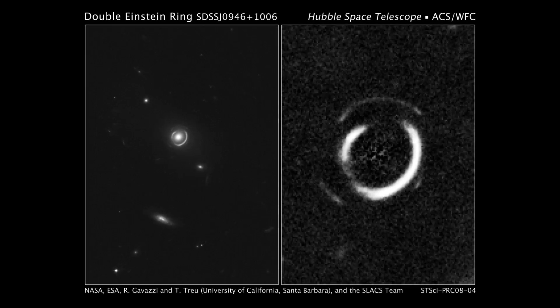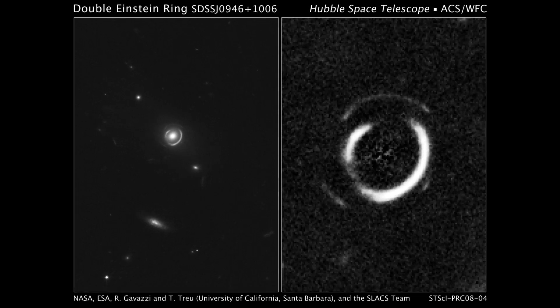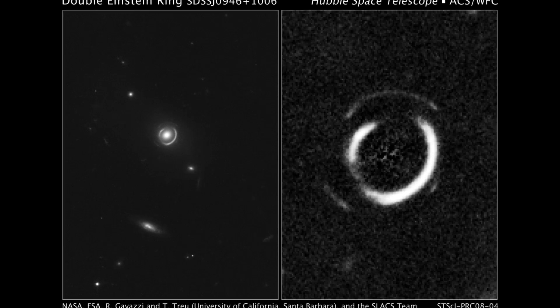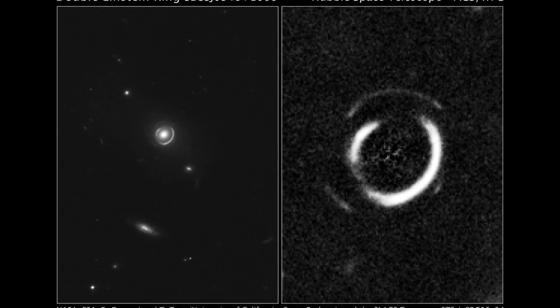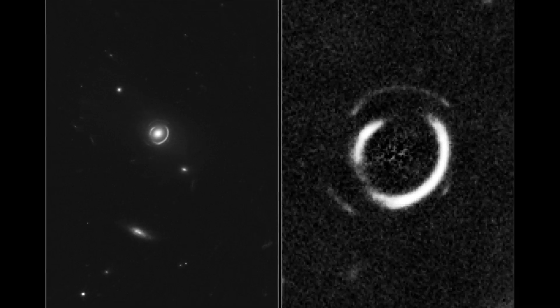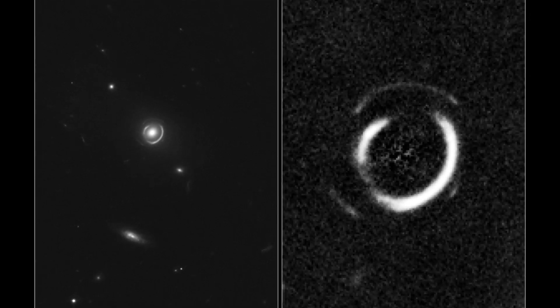Using the Hubble Space Telescope, a double ring has been found by Rafael Gavazzi of the STScI and Tommaso Treu of the University of California, Santa Barbara.